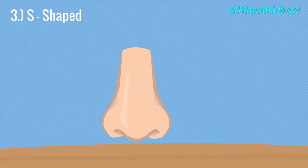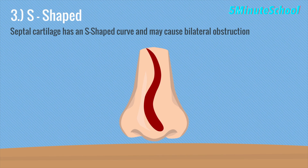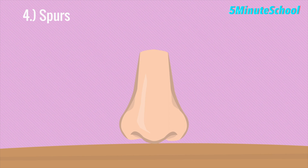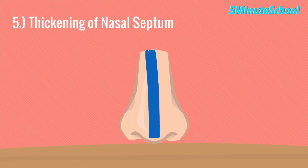The third type is the S-shaped deviation, where the septal cartilage has an S-shaped curve which can cause bilateral nasal obstruction. The fourth type is called spurs — shelf-like projections often at the junction of the bone and cartilage, which can press against the nasal wall causing headaches and nosebleeds. The fifth type is thickening of the nasal septum, often due to injury, which obstructs the nasal passages.